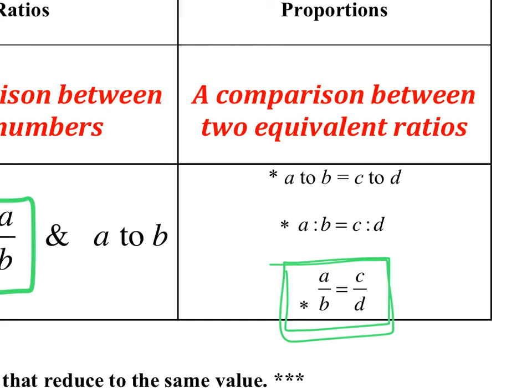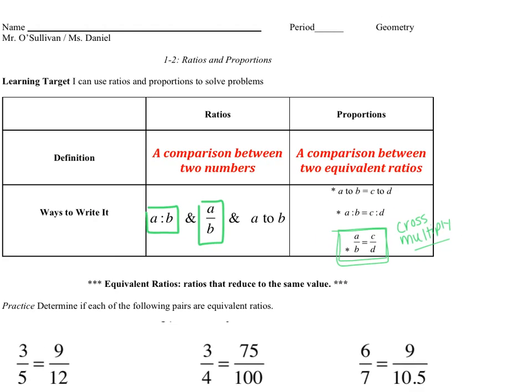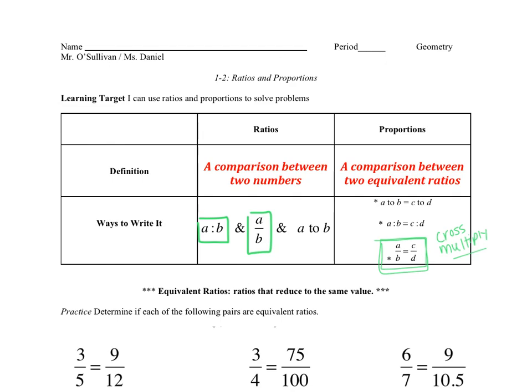And to solve this, when you want to solve for X, we're gonna be doing something we learned way back when, and that's cross multiply. So we're gonna be going back to cross multiplying, which is something you did learn in middle school. So there you have it. That's the definition and the ways to write it for ratios and proportions.